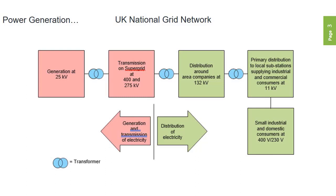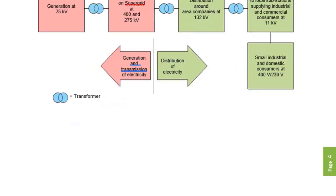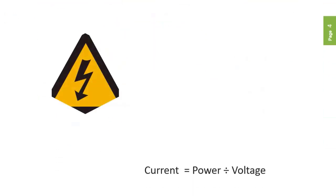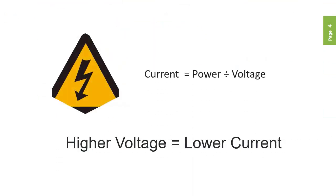This higher voltage is used for many reasons. Firstly, because current is equal to power divided by voltage — or I equals P divided by V — by increasing the voltage, we reduce the amount of current flowing in the conductors, which in turn allows for a smaller conductor to be used.